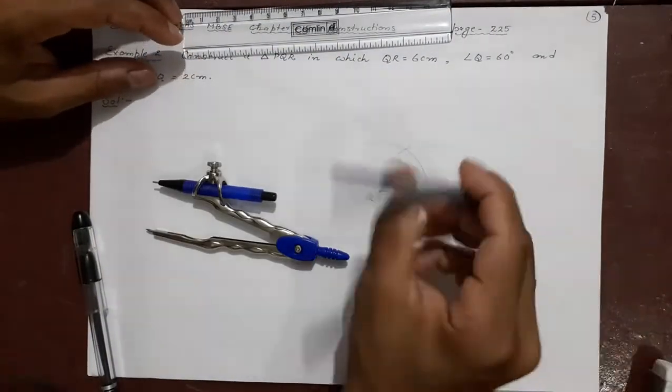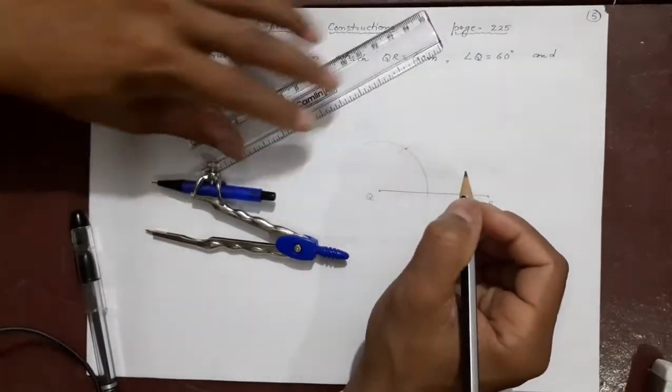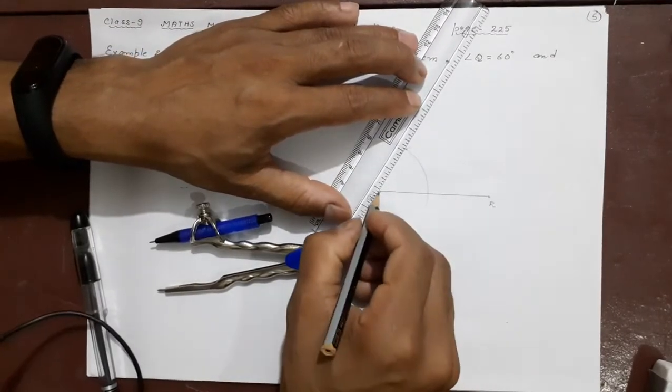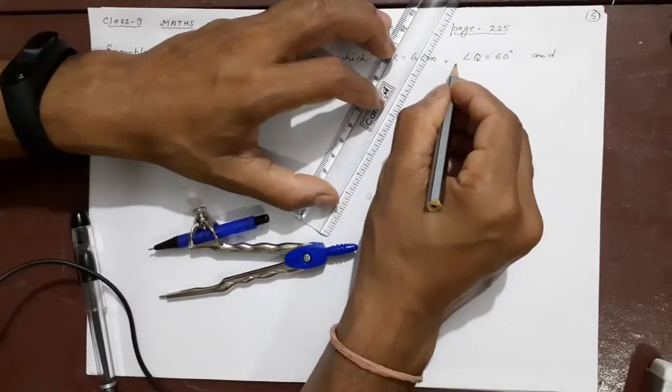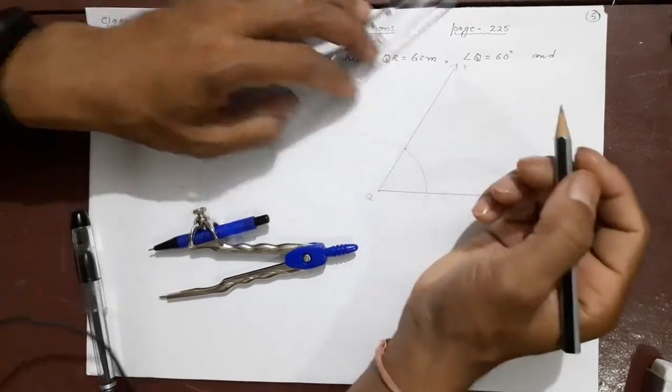This is that. This will be your 60 degree. I am going to join this to make CBX. Done. This may be required longer but it is okay.